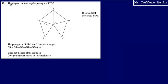This is question 12. The diagram shows a regular pentagon ABCDE divided into five isosceles triangles. We're told that OA equals OB equals OC equals OD equals OE, and this is 6 meters.